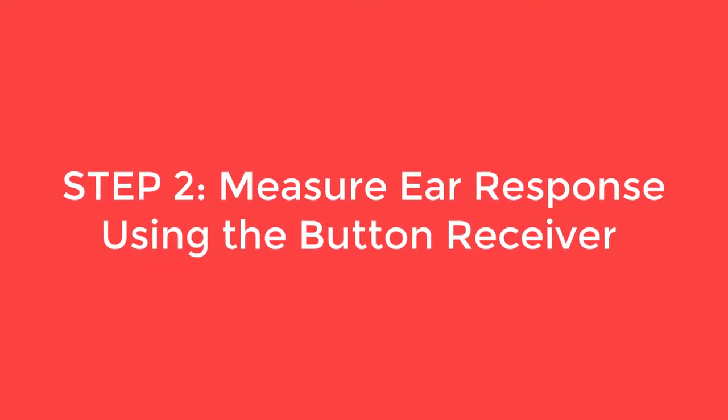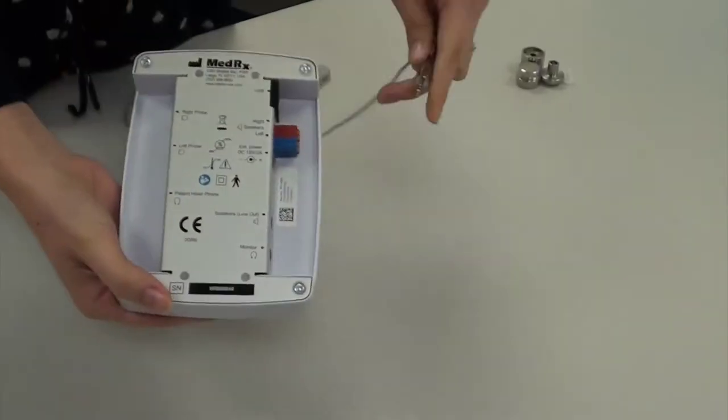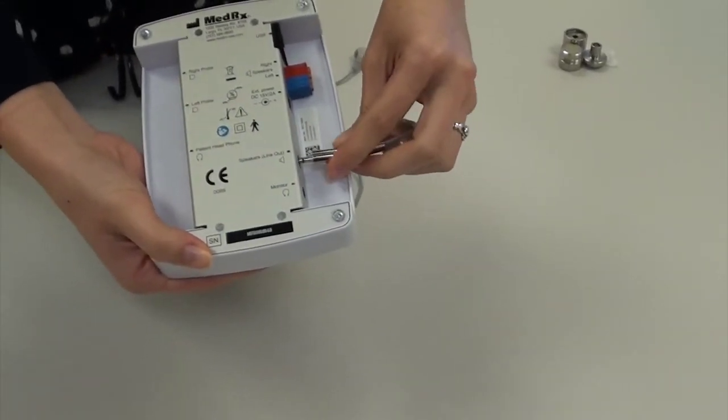The second step is to measure the ear response using the button receiver. Plug the button receiver into the port labeled speakers on the REM plus or ARC system.